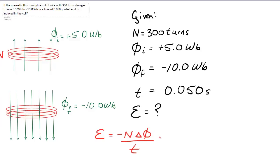So now, if we put in the values, I get negative 300. Change in anything is always final minus initial. So it's minus 10.0 Webers minus 5.0 Webers. All divided by 0.050 seconds. And we end up getting our answer.